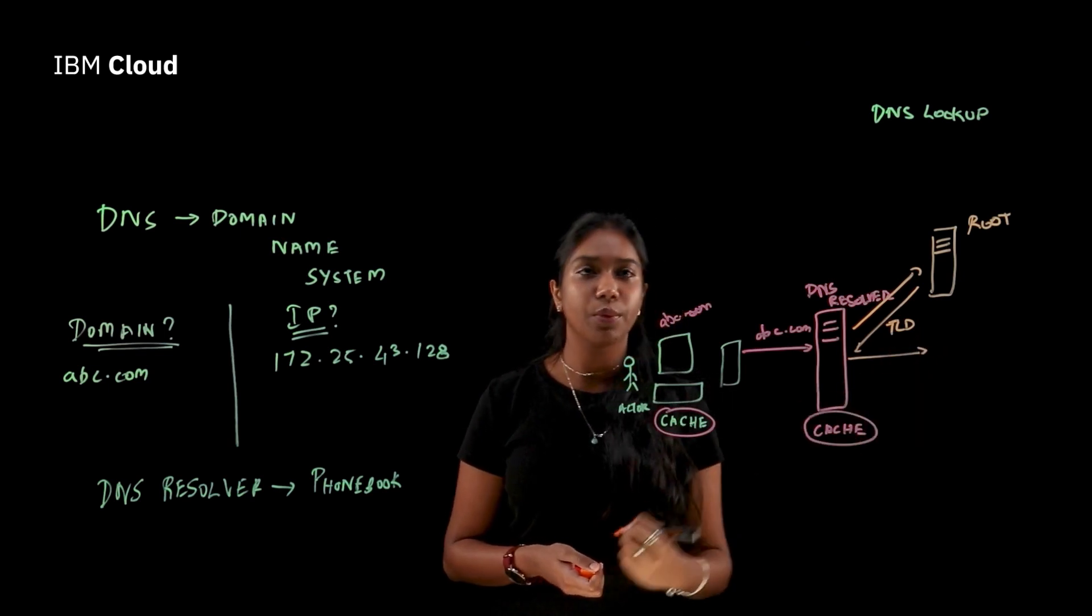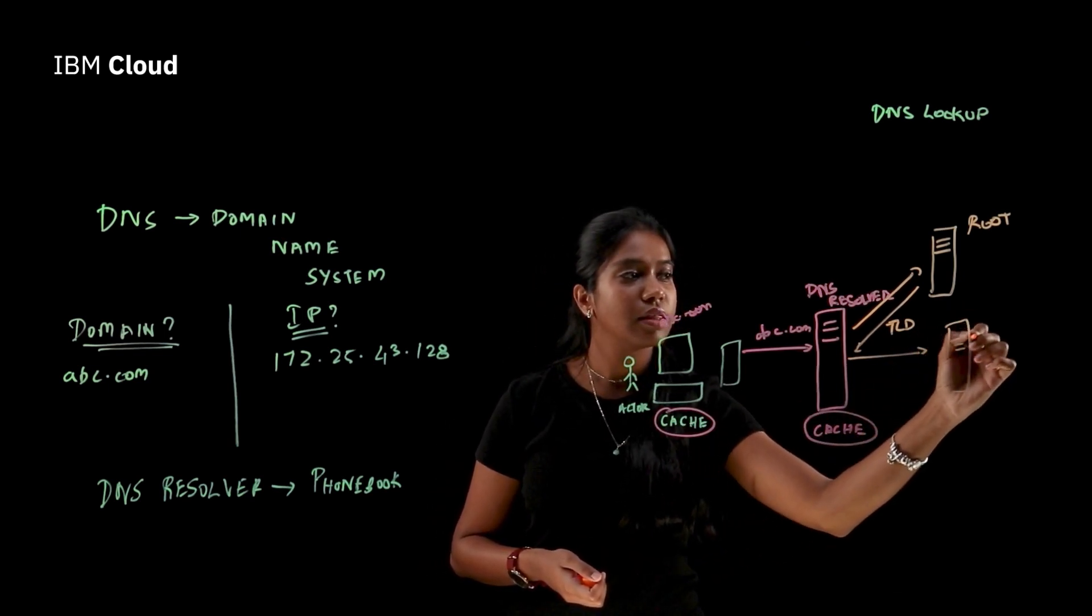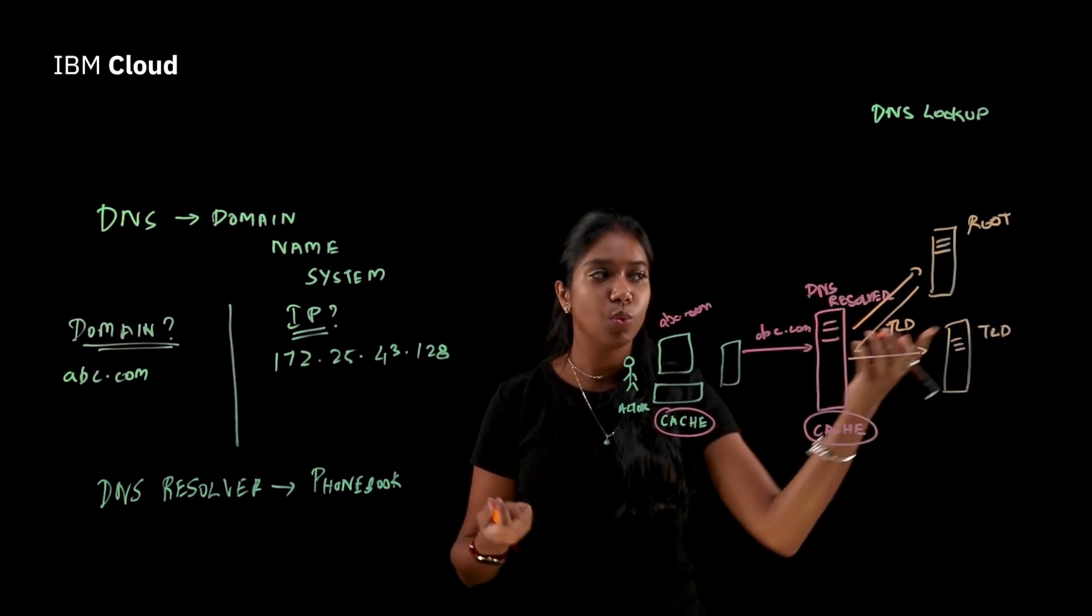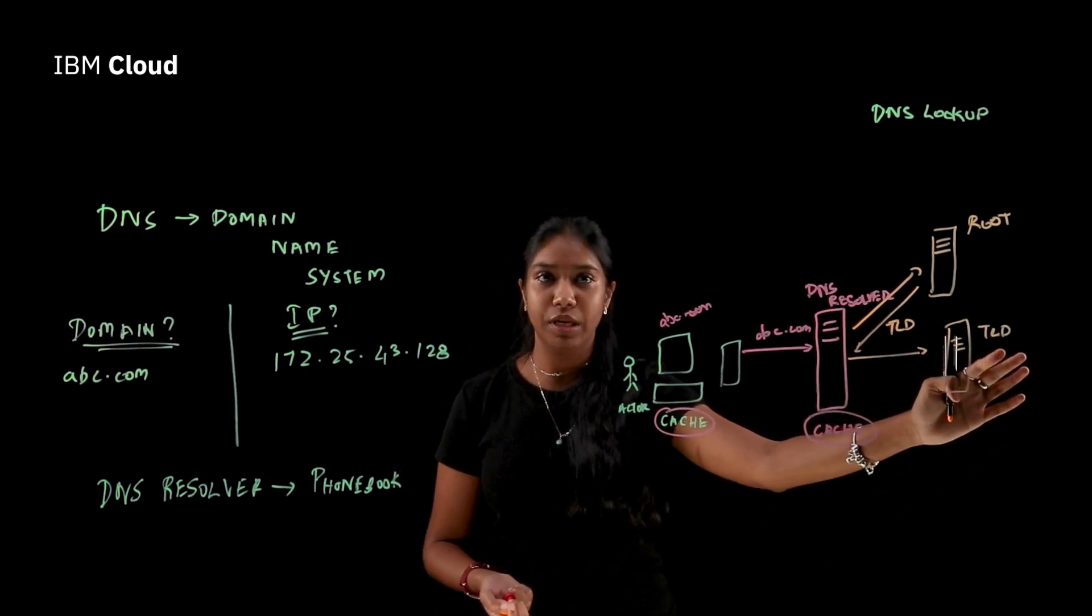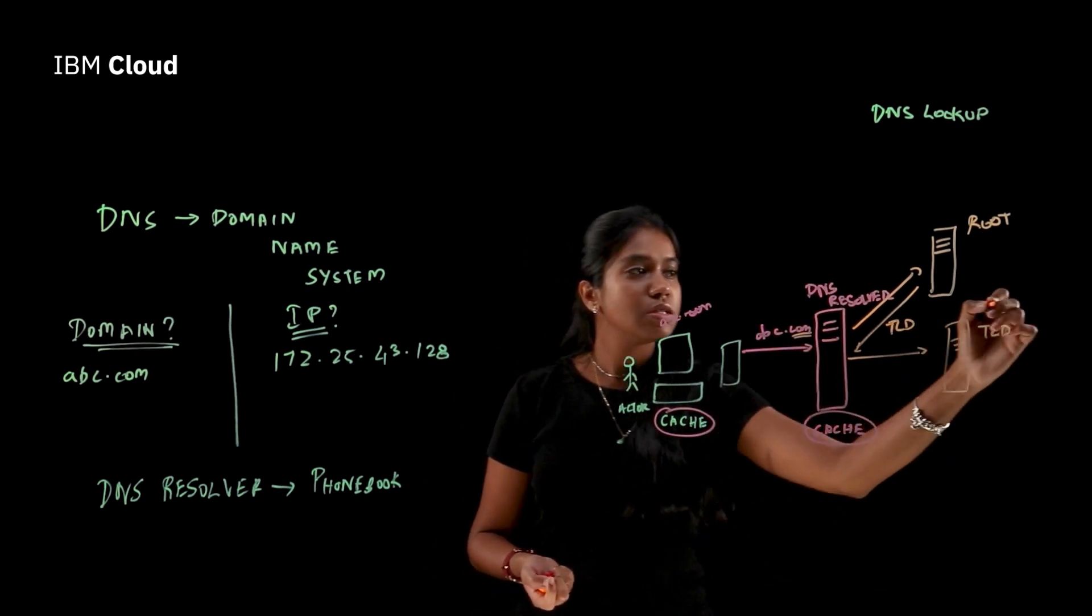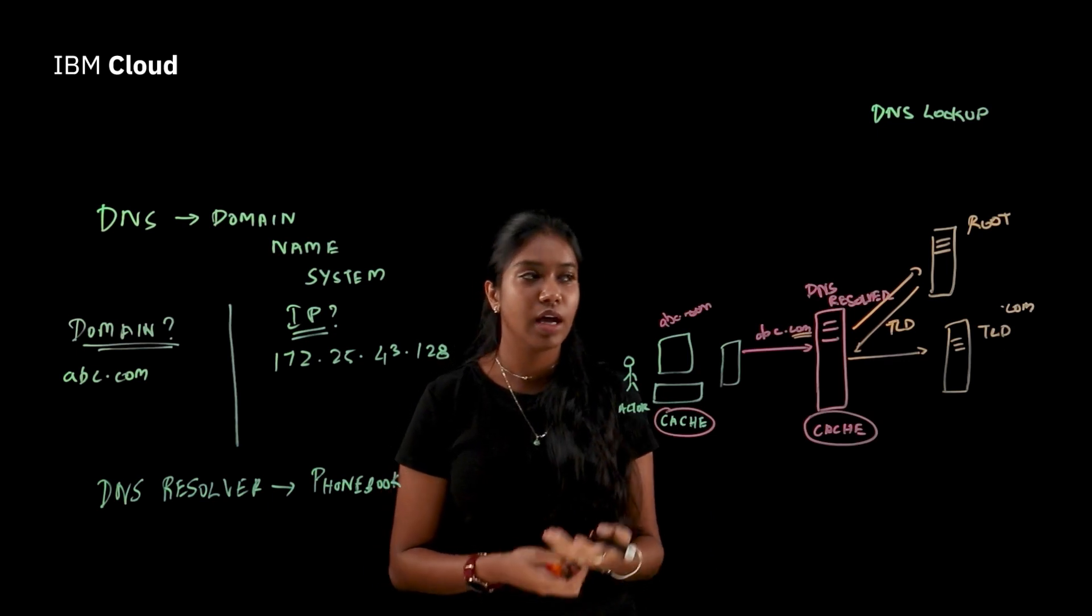So now we send the request to the TLD server. And the TLD is nothing but top level domain, which basically means it has all the information for the top level domain. And in this case, the top level domain is going to be your .com. So it could be anything like .net, .org, as such.